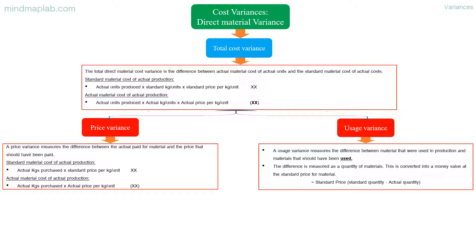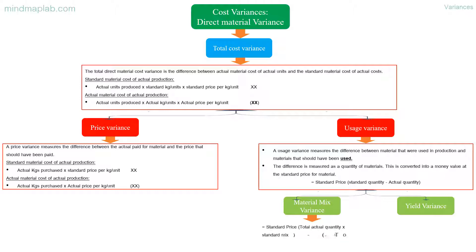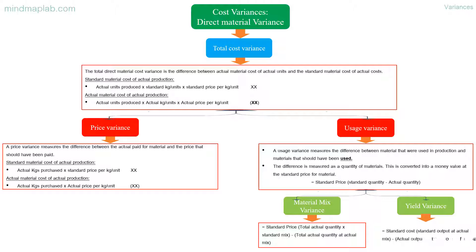Usage variance is further classified into material mix variance and yield variance. Material mix variance is calculated as: standard price multiplied by the difference between total actual quantity at standard mix and total actual quantity at actual mix. Yield variance is calculated as: standard cost multiplied by the difference between the standard output at actual mix and actual output at actual mix.